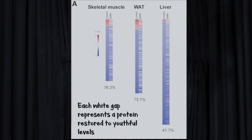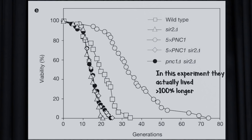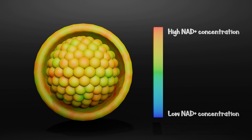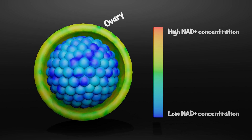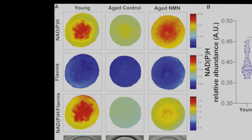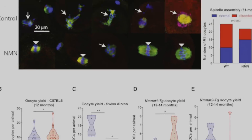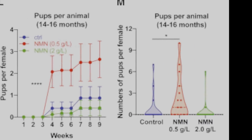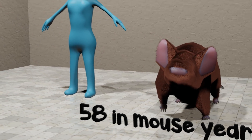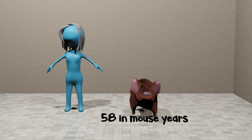Old mice show signs of rejuvenation after receiving NAD boosters, yeast can live 30% longer, and my personal favorite study: old mice regain fertility. In a recent study on elderly mice, it was shown the concentration of NAD in the oocytes, or eggs, of mice greatly decreased over time compared to the ovary tissue around them. By supplementing the mice with NAD boosters, the concentration of NAD in the oocytes also increased, accompanied by an increase in oocyte diameter, rate of spindle organization, viability of potential offspring, and number of offspring per mouse. The mice used were 12 months old — the equivalent of a 58-year-old person.